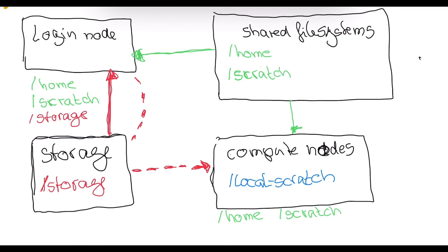A way that storage file systems can be used in relation to calculations is: if available on the compute nodes, users can read in large input files at the start of their calculation, or copy output back to storage right after the calculation is finished. These are appropriate ways to use the storage file system — but it should never be used directly by putting output into it during a calculation. Before and after is possible, but not during a calculation.